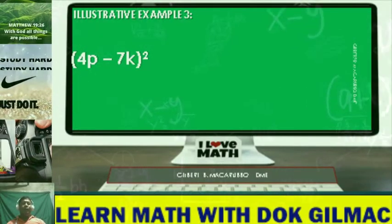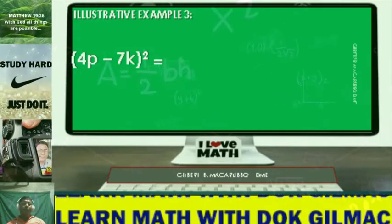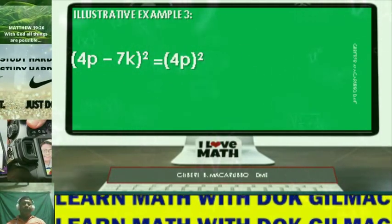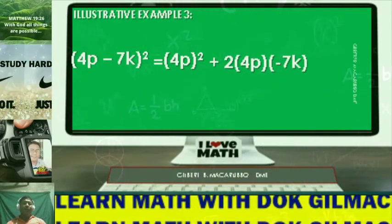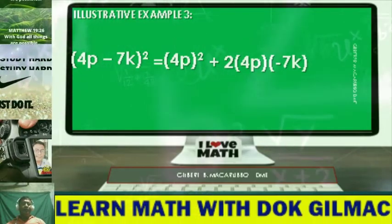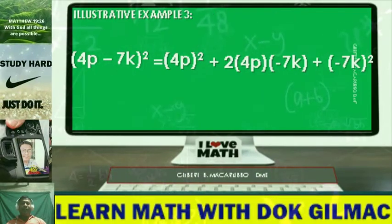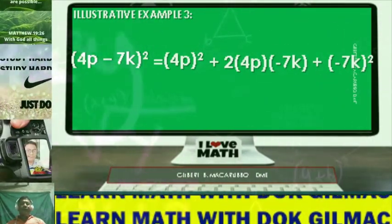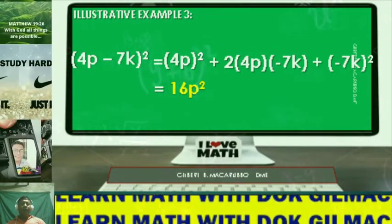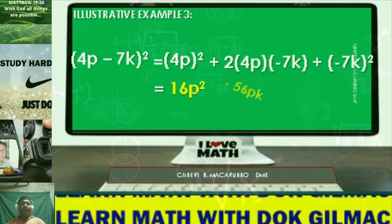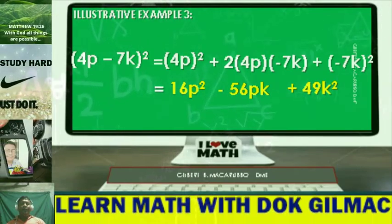This is just equal to the square of the first term, which is 4P, plus twice the product of the first term and second term, which is 4P and negative 7K, plus the square of the second term, which is negative 7K. Simplifying further, this is just equal to 16P squared minus 56PK plus 49K squared.